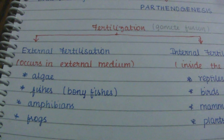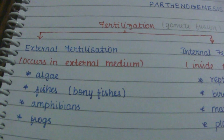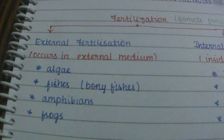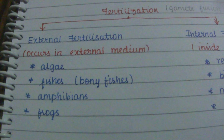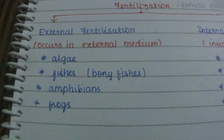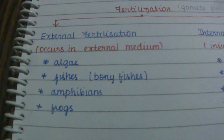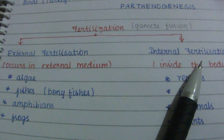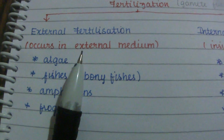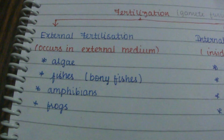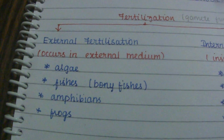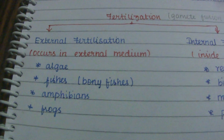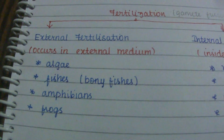In external fertilization, the majority of animals use water as their medium in order to enhance the chances of syngamy. A large number of offspring are produced when compared with internal fertilization. However, these offspring are vulnerable to predators and have no security as they develop toward adulthood.